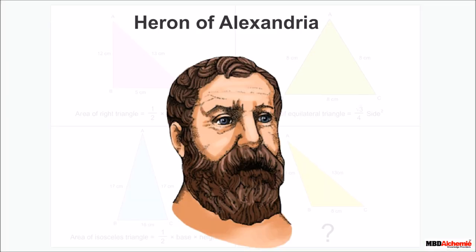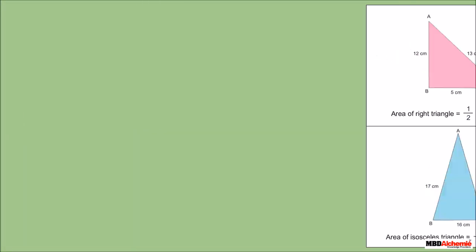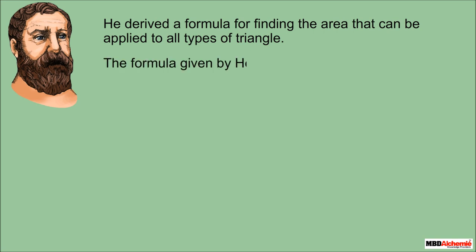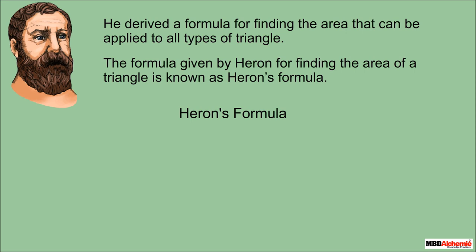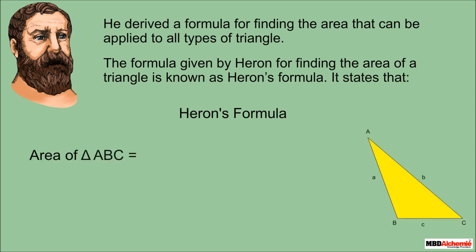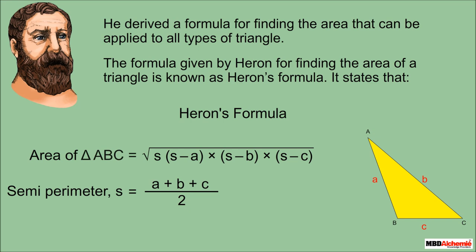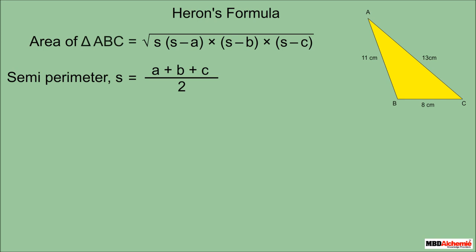The great mathematician Heron was also interested in finding the area of any triangle and derived a formula applicable to all types of triangles. Neil's father explains that Heron's formula states: the area of a triangle equals the square root of S × (S − a) × (S − b) × (S − c), where a, b, and c are the sides of the triangle and S is the semi-perimeter — half of the perimeter. This formula is helpful when the height of the triangle is not easy to find.